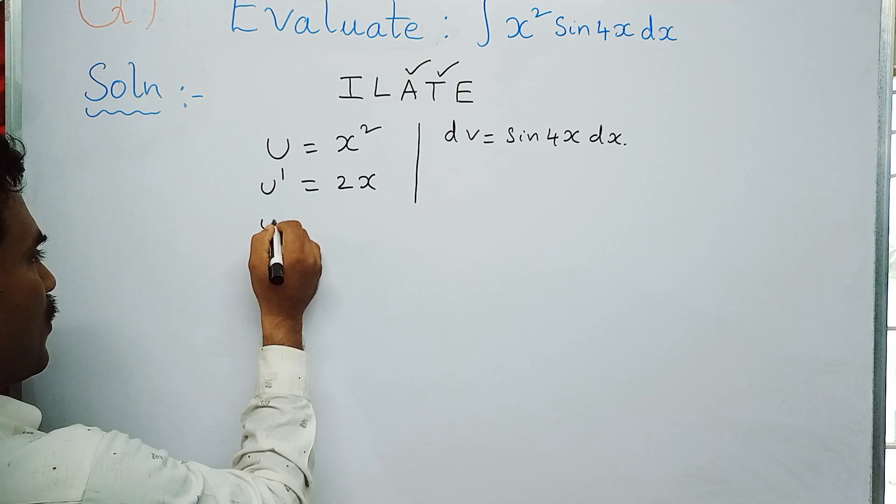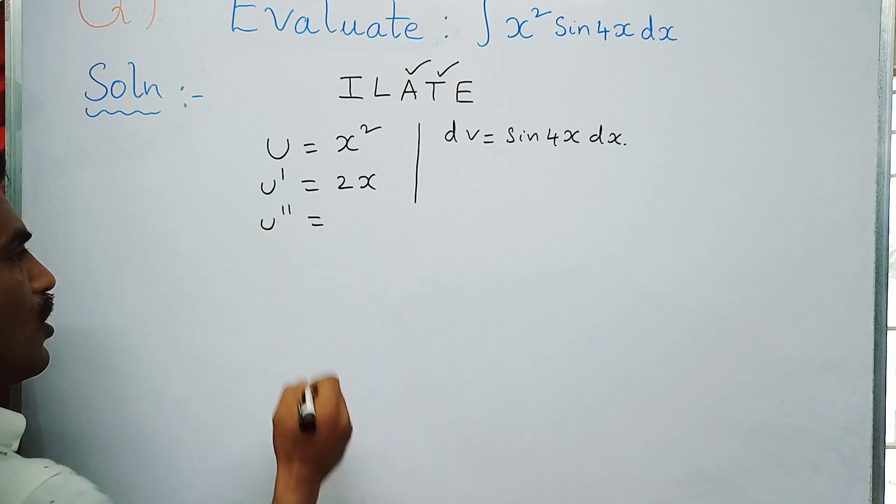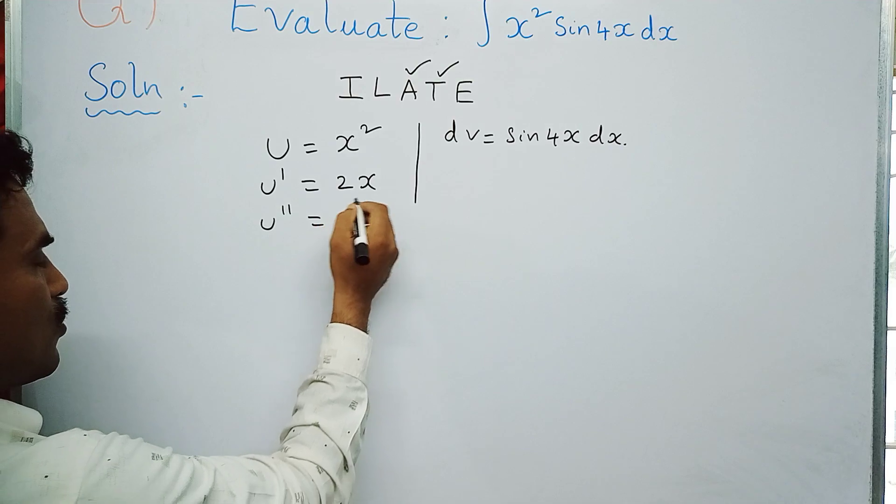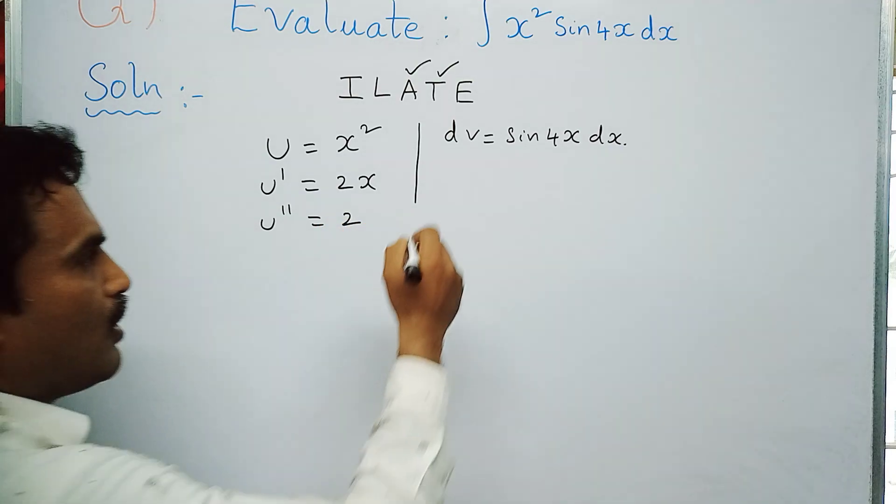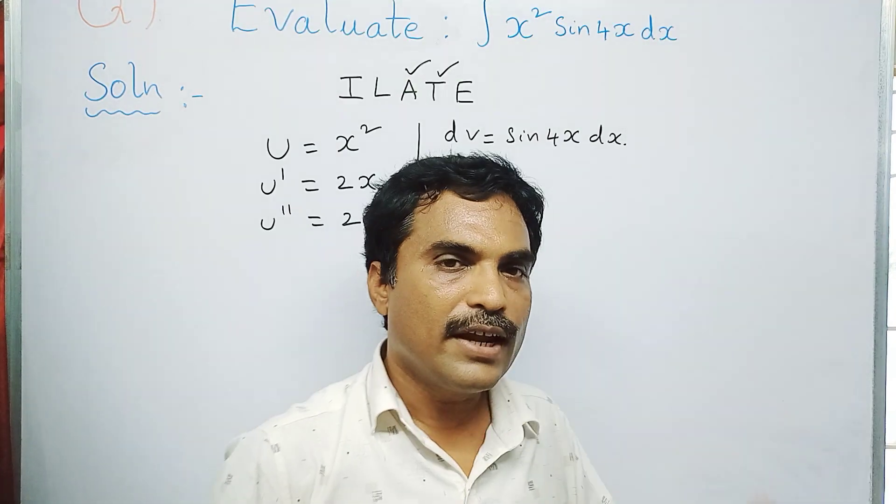Again differentiate on both sides. U dash will become u double dash is equal to—now 2 is a constant, so d by dx of x is 1, so 2 times 1 is 2.